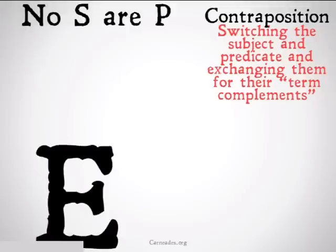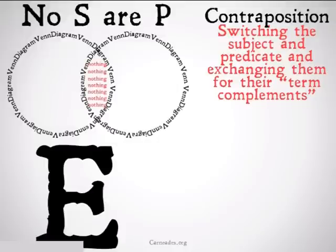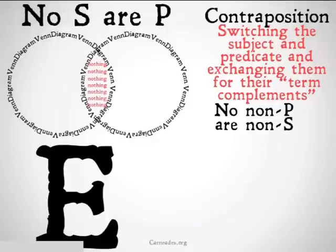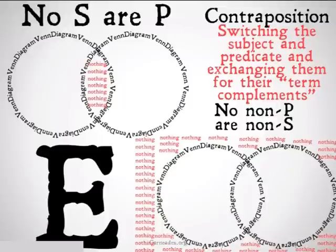This is going to be a fallacy for E statements. No S are P — we fill in our Venn diagram like that. The contraposition of that is going to be: no non-P are non-S. In this case, we would fill in all of the area around the Venn diagram, saying there's nothing there, because basically what this is saying is there is nothing that is both not a P and not an S. It's clearly saying something very different from our original E statement, so it's an example of the fallacy of illicit contraposition.